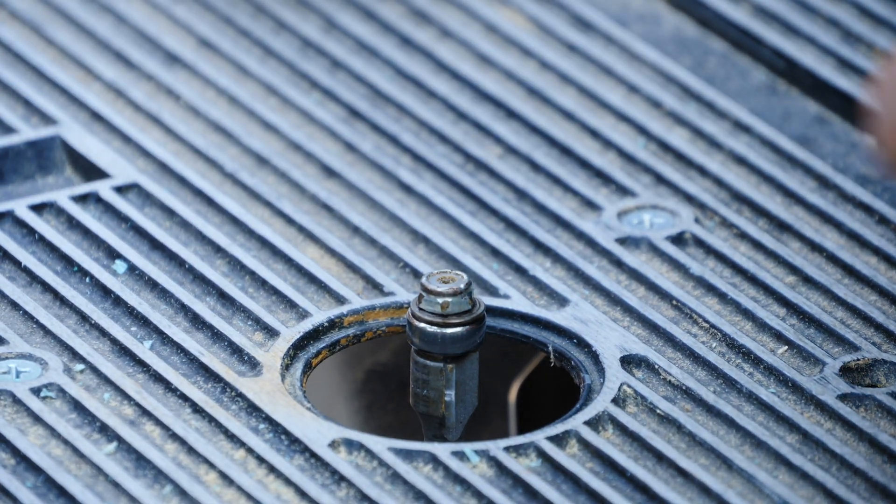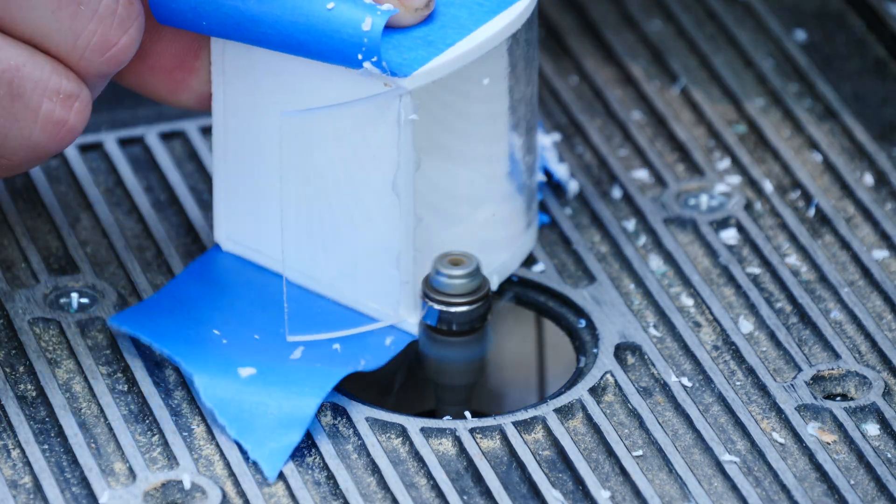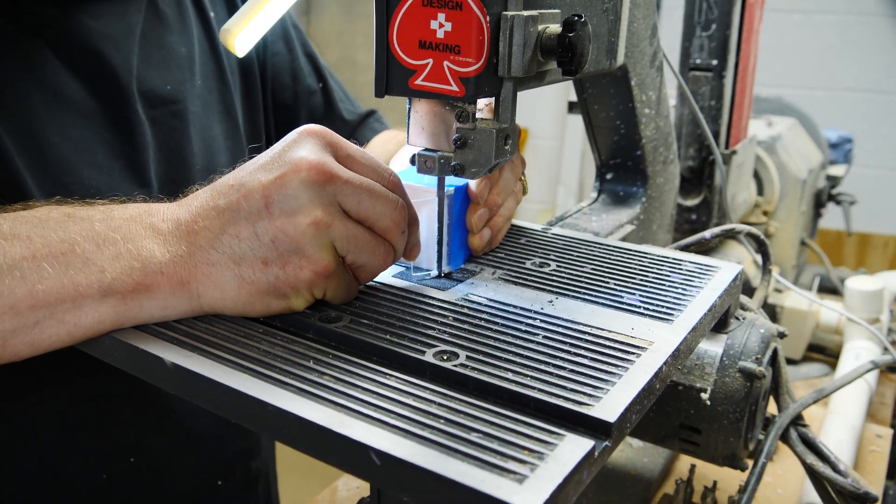Let's replace that crappy bearing on the flush trim bit with a brand new one and trim against the drape formed clear curved part that we made earlier.